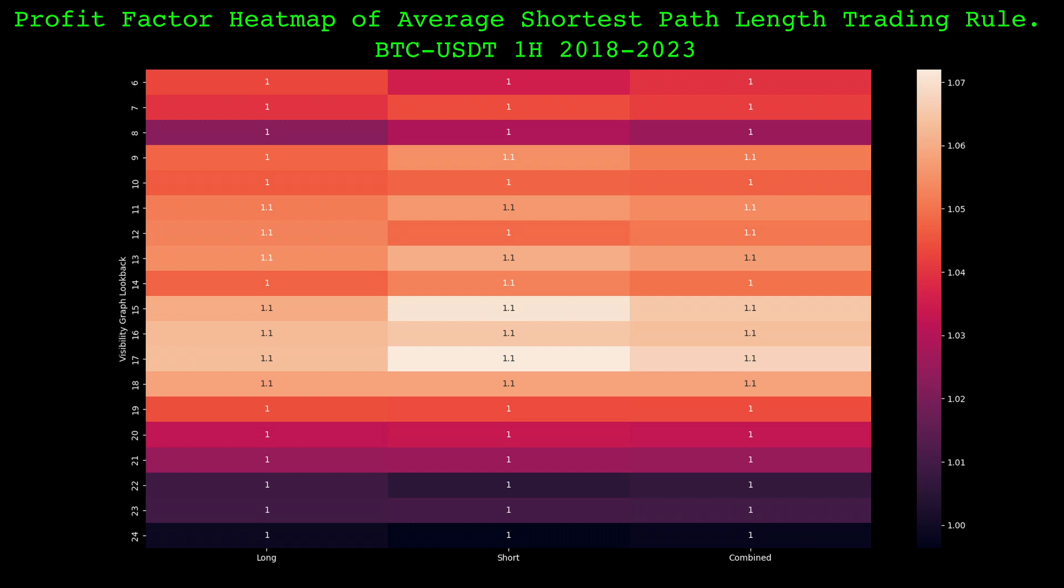Here's a heatmap of profit factors using the same average shortest path trading rule across several lookbacks for the visibility graphs. There is a big drop off in performance at higher lookbacks, but the lookback 12 I chose was not a fluke, the neighboring values did good as well.